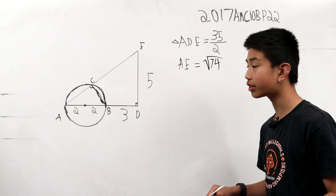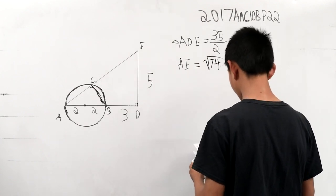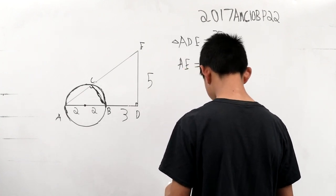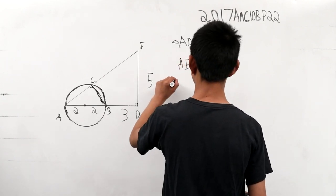Now we can set up a system of ratios because they can help solve. So the first ratio we can set is triangle ABC...